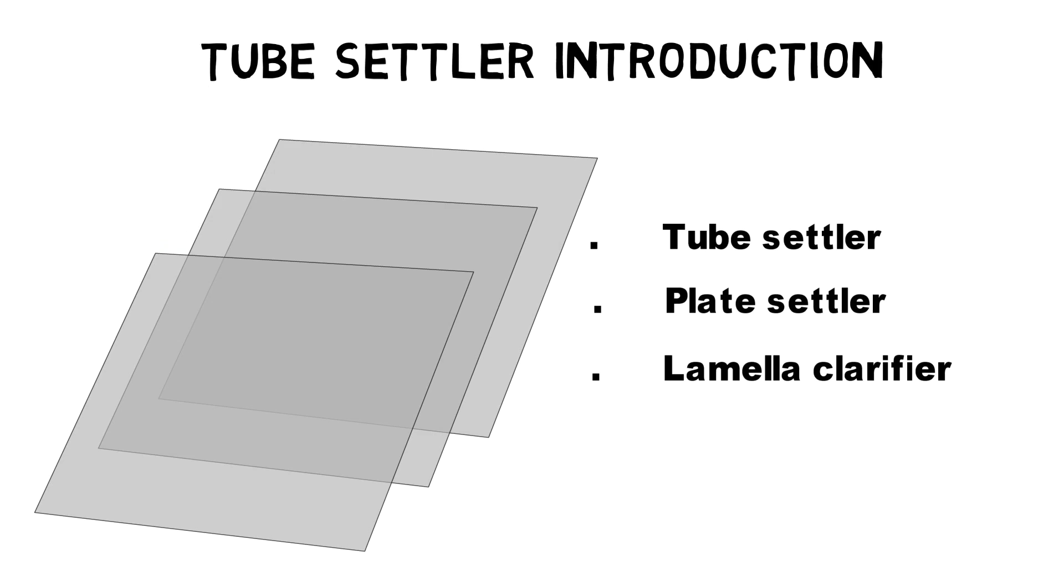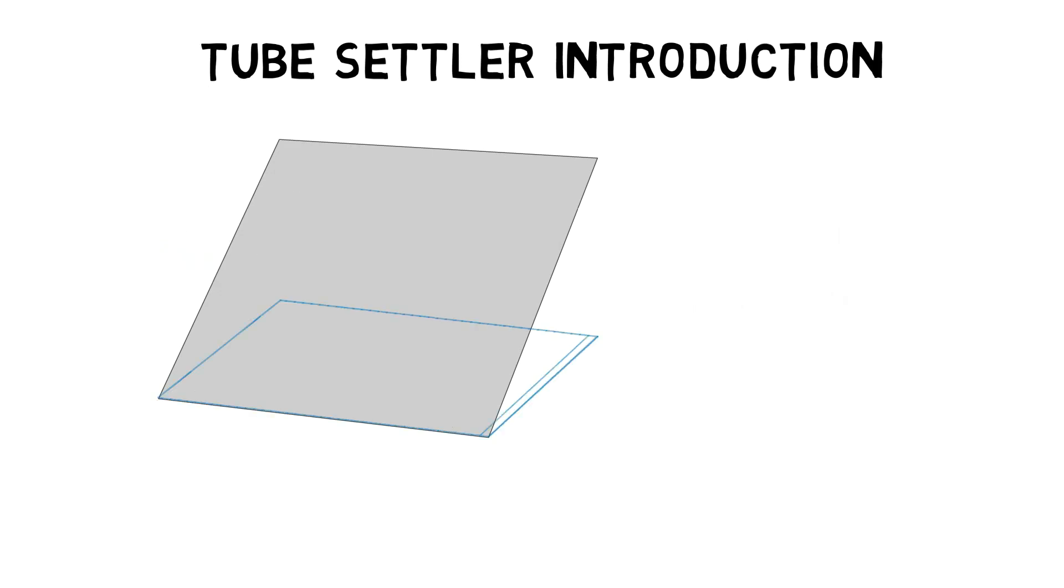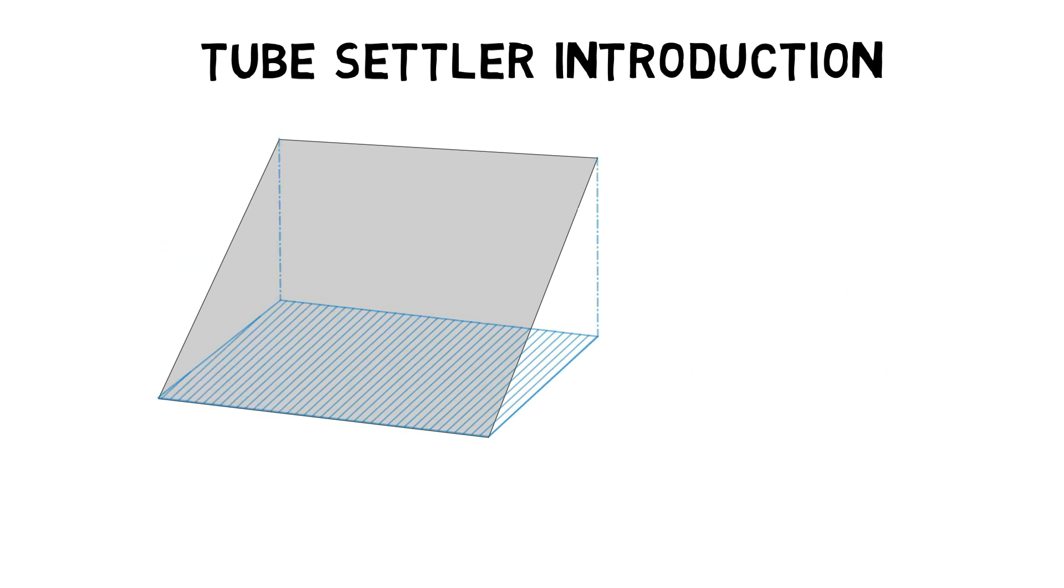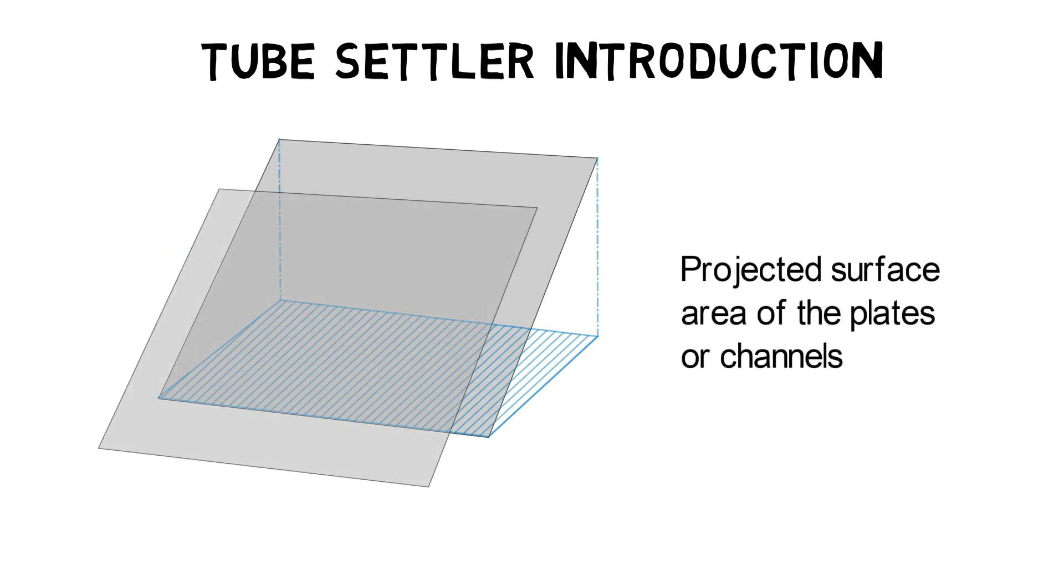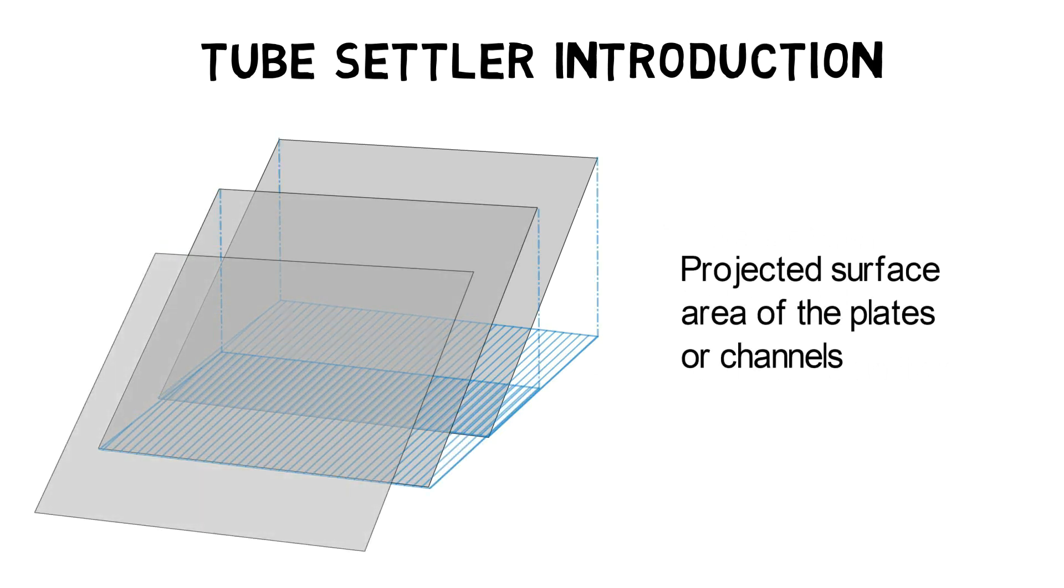The total settling area is the sum of the projected area in horizontal direction multiplied by the total amount of plates or channels.